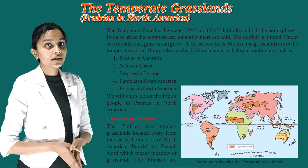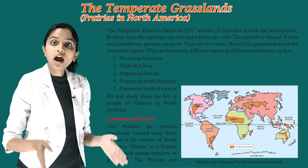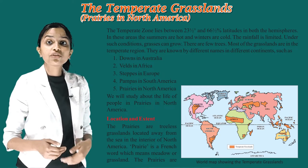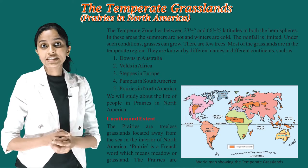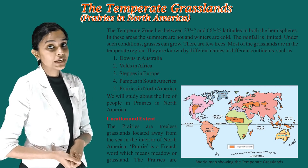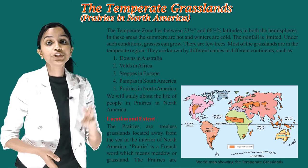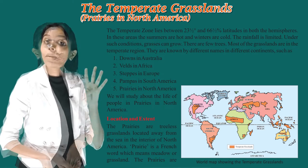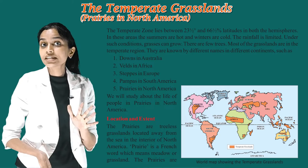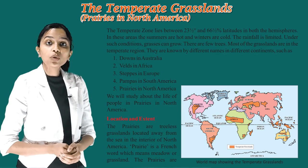Most of the grasslands are in the temperate region. They are known by different names in different continents — such as Downs in Australia, Veld in Africa, Steppes in Europe, Pampas in South America, and Prairies in North America. We will study about the life of people in prairies in North America.